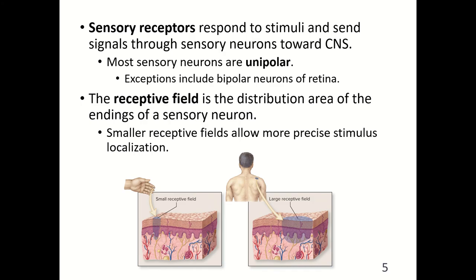Sensory receptors respond to stimuli and send signals through sensory neurons toward the central nervous system. Most sensory neurons are unipolar, with exceptions including the bipolar neurons of the retina. The receptive field is the distribution area of the endings of a sensory neuron. Smaller receptive fields allow more precise stimulus location — like a pinprick versus a blunt object pressing against your skin.